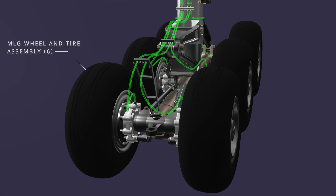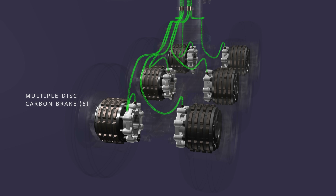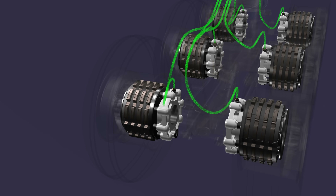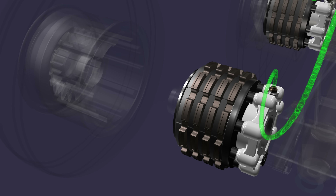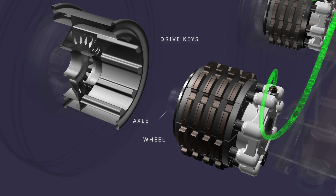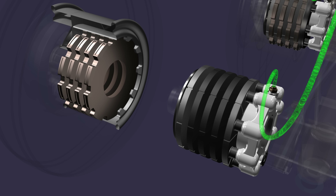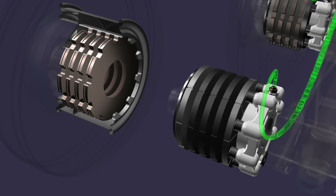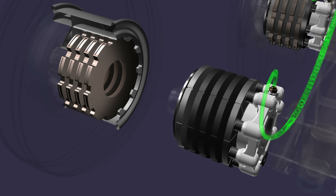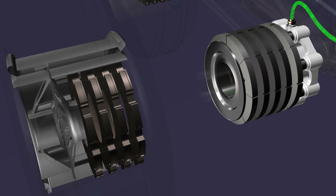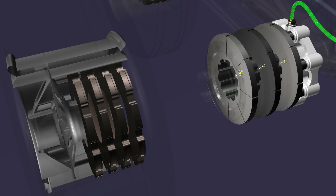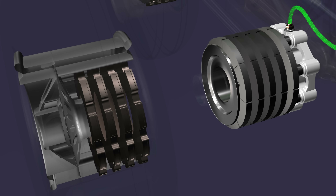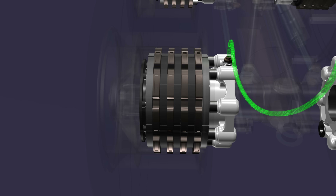There are six wheel and tire assemblies on the main landing gear of the Boeing 777, and each assembly is equipped with multiple disk carbon brakes. The brake assembly is a rotor stator unit mounted on the axle. The inner surface of the wheel has drive keys. The brake rotors slide into the drive keys and engage with the wheel. Therefore, as the wheel rotates, the rotors rotate with it. The brake assembly also has an end plate, stators, and a pressure plate. These discs are keyed to the brake assembly and remain stationary. The rotors are stacked between these plates and are driven by the rotating wheel.